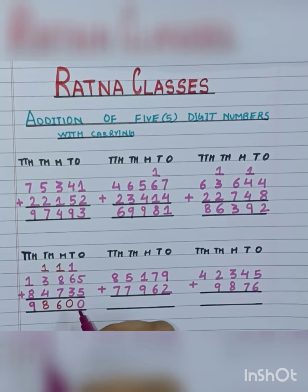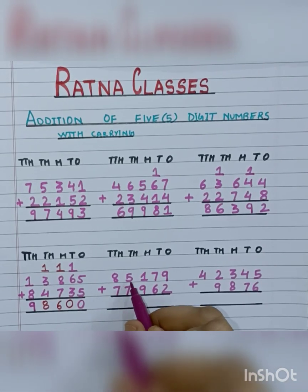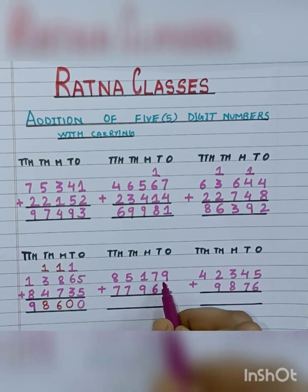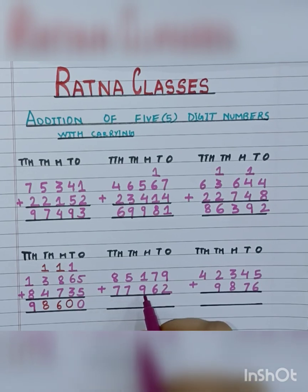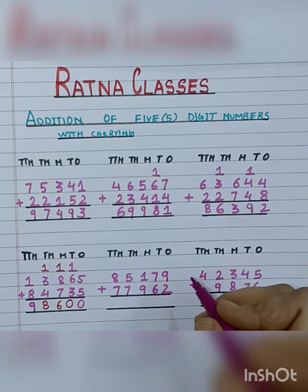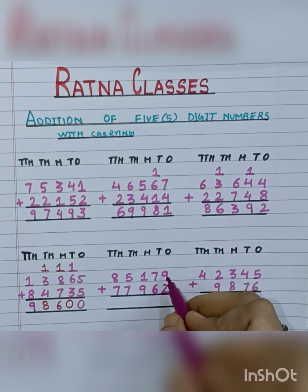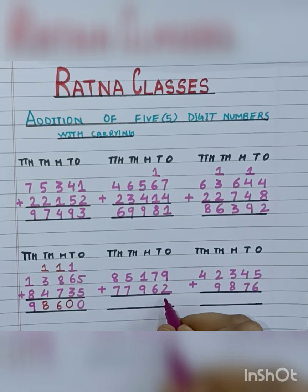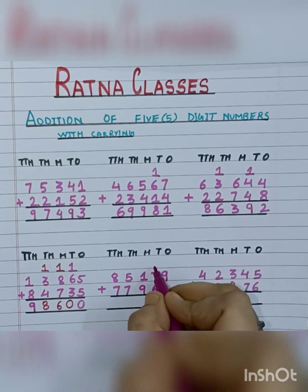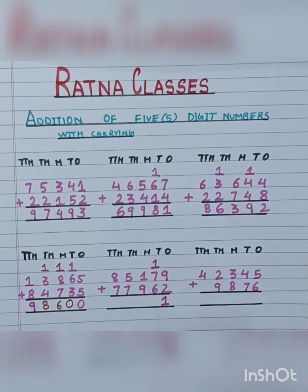Let's move to the next sum: 85,179 plus 77,962. First of all, we will add 9 plus 2, which is 11. So we will write 1 here and take 1 carry forward.